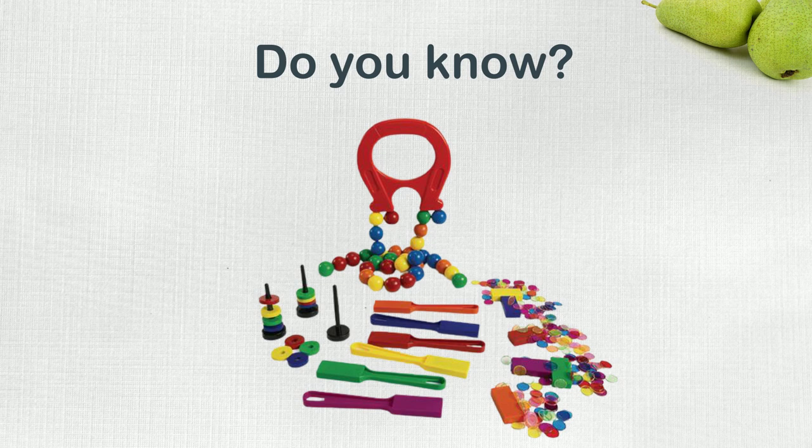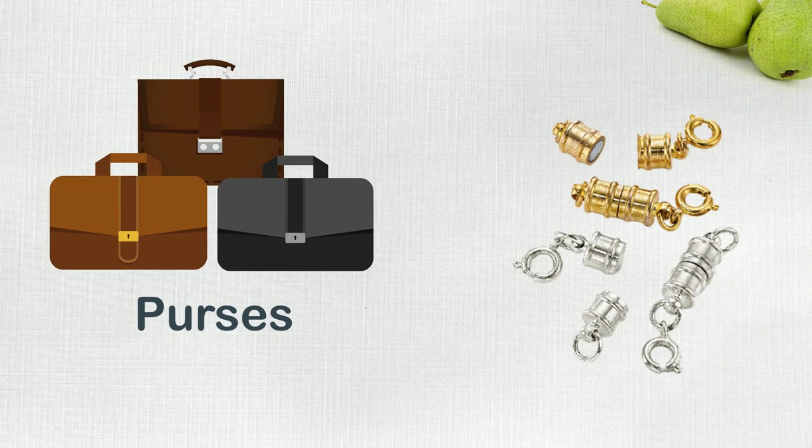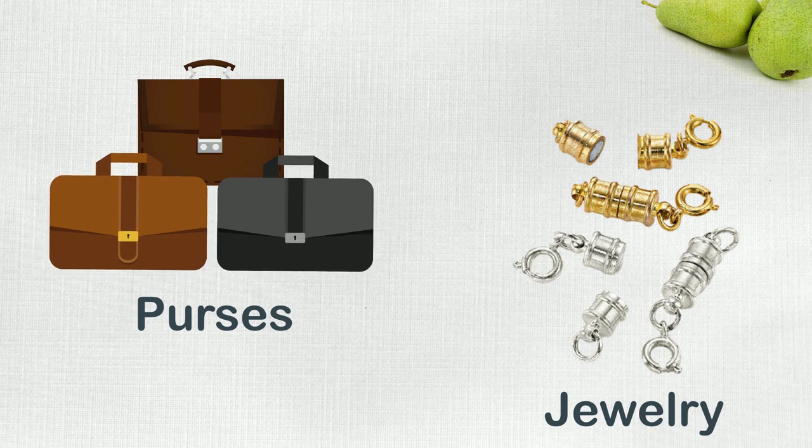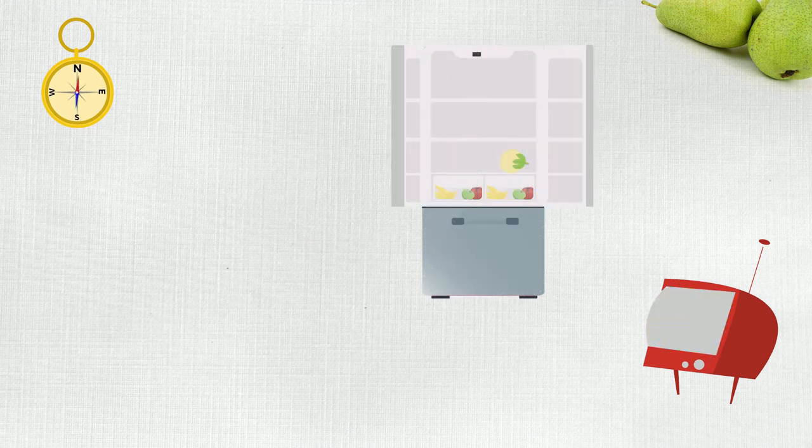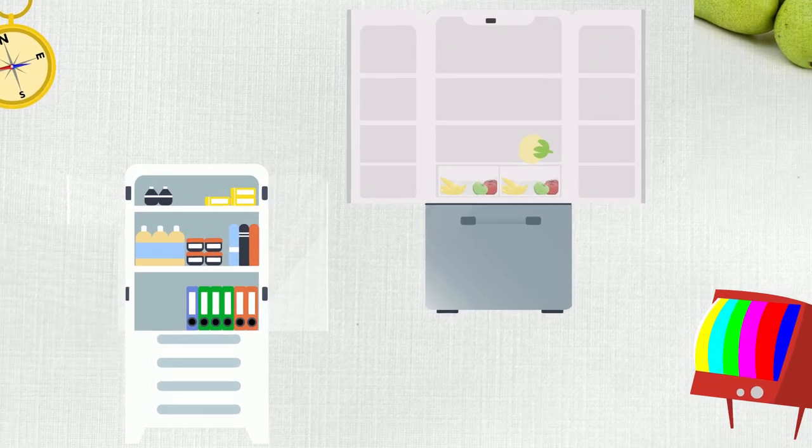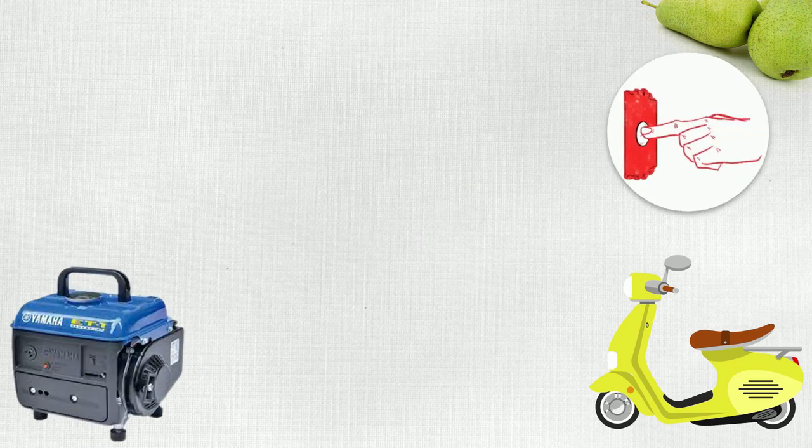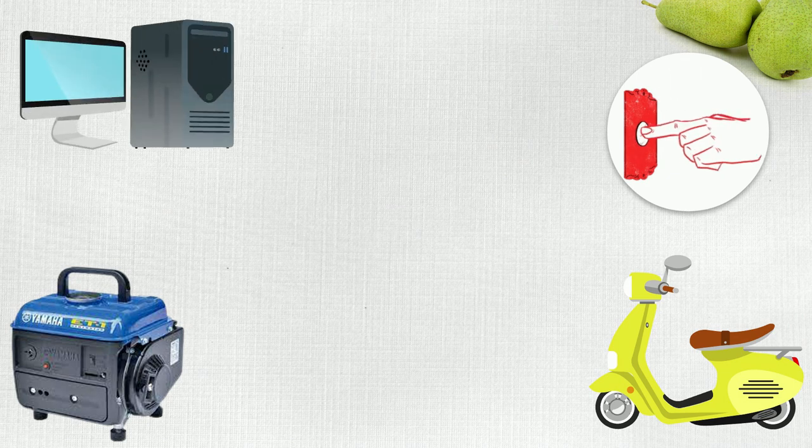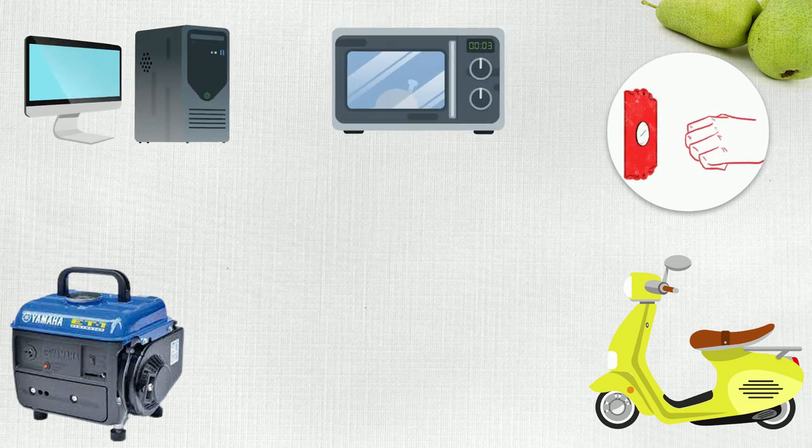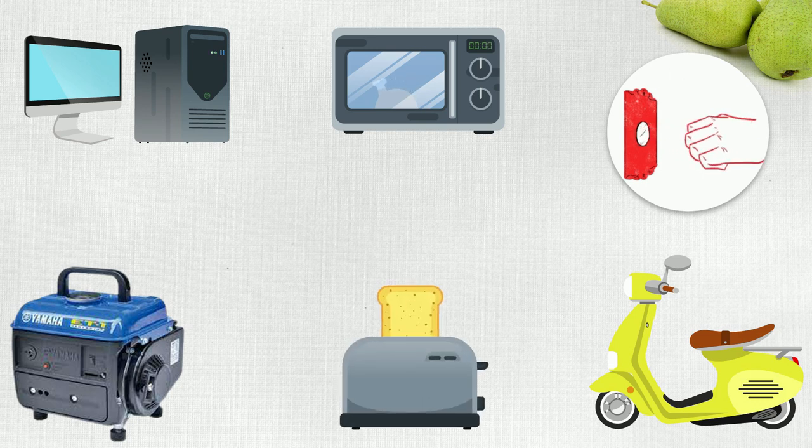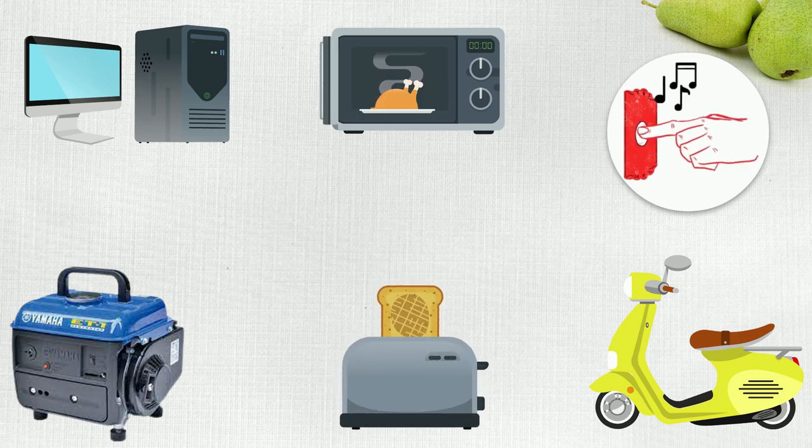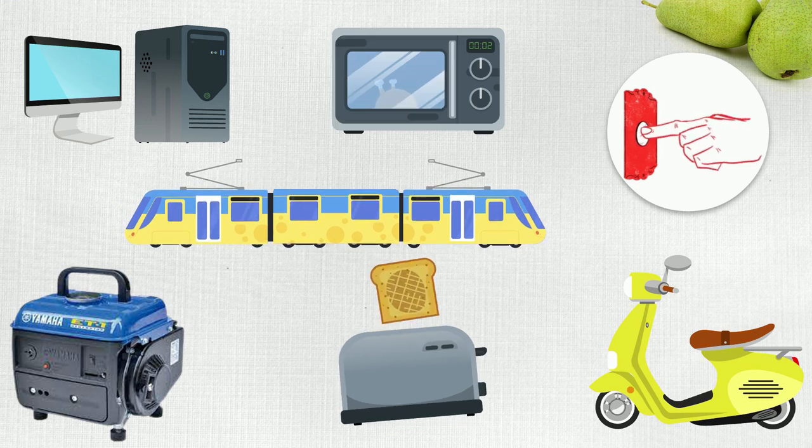For instance: purses and some jewelry often have magnetic clasps to close them, compass, television, refrigerator door, cabinet doors, motors and generators, doorbell, computer, microwave oven, toaster, and trains have magnets inside them too.